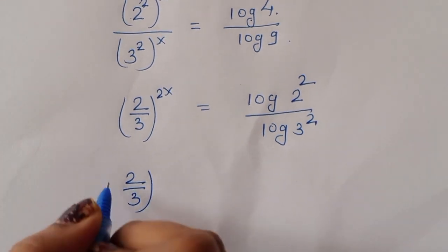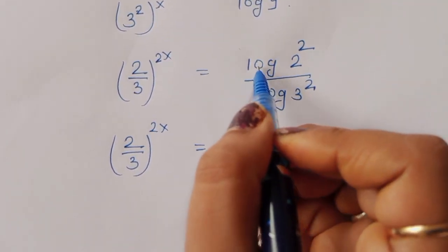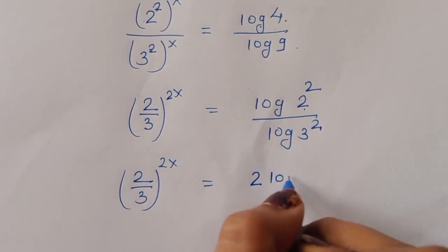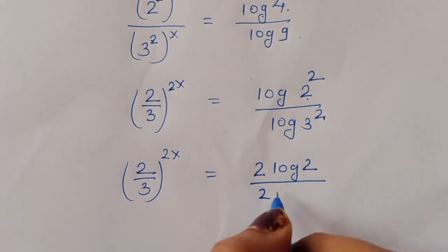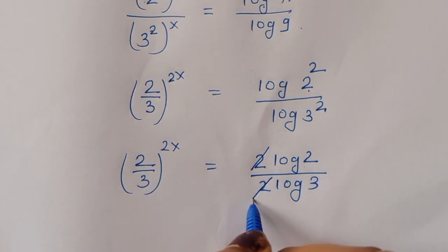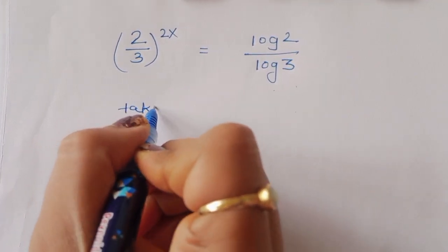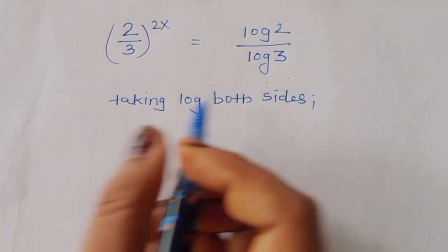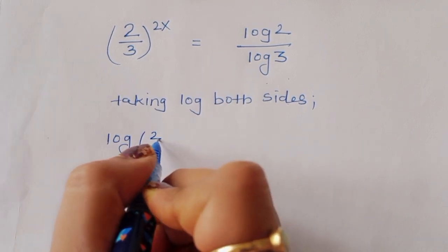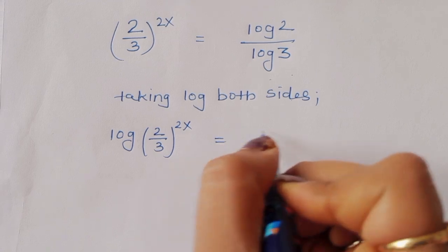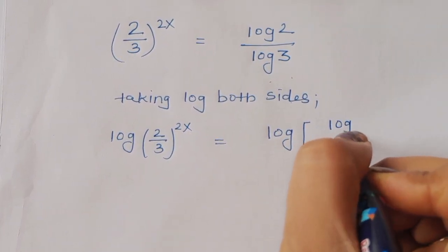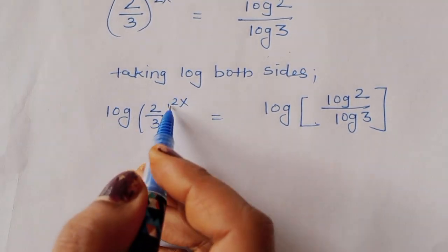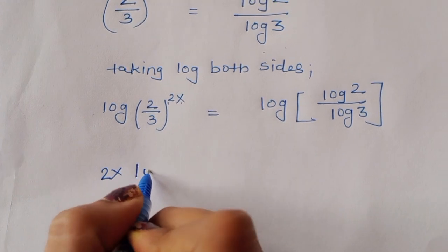So (2/3) power 2x is equal to log of 2 squared over log of 3 squared. Using the formula log of a power b is equal to b log a, this becomes 2 log of 2 divided by 2 log of 3. The 2's cancel out, giving log of 2 divided by log of 3. Now taking log both sides: log of (2/3) power 2x is equal to log of (log 2 over log 3).